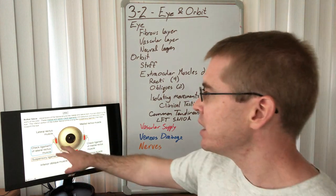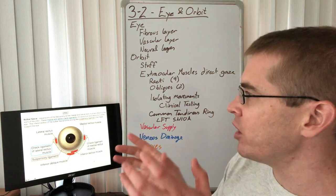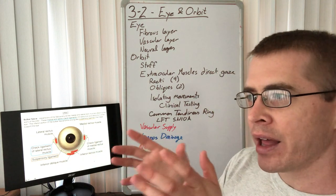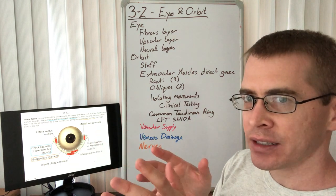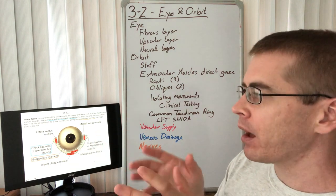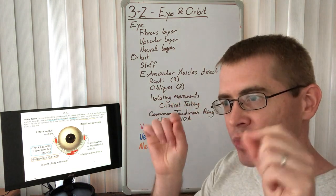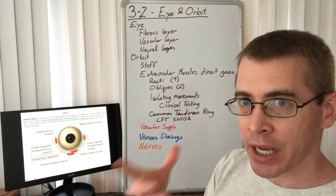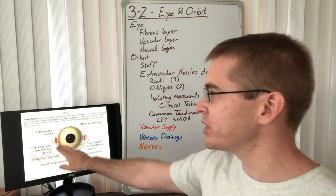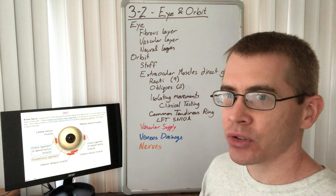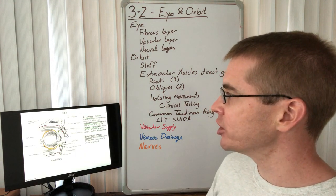The bulbar fascia has check ligaments on either side that help keep the eye in position, limiting its abduction and adduction within the orbit and maintaining attachments to the sides of the orbit — kind of like a hammock hanging within the orbit. The extraocular muscles can be seen piercing portions of that bulbar fascia.